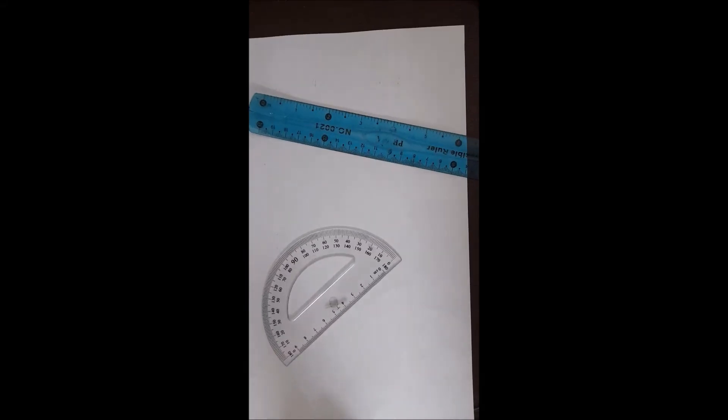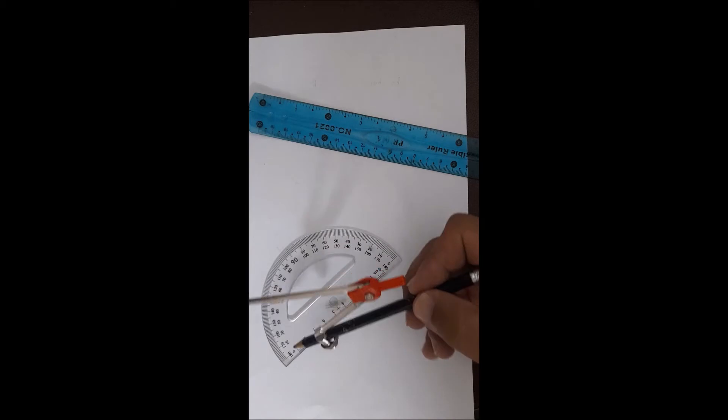Assalamualaikum dear students. Today we will study how to draw angles: acute angles, right angles, and obtuse angles. Before that, I would like to explain about the protractor. There are two types of grading on the protractor.